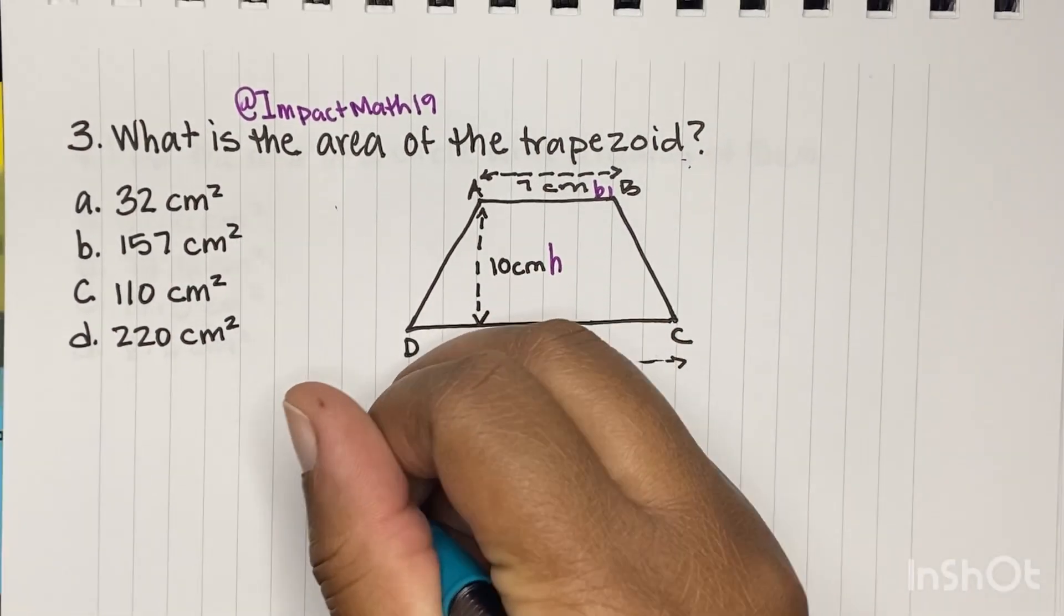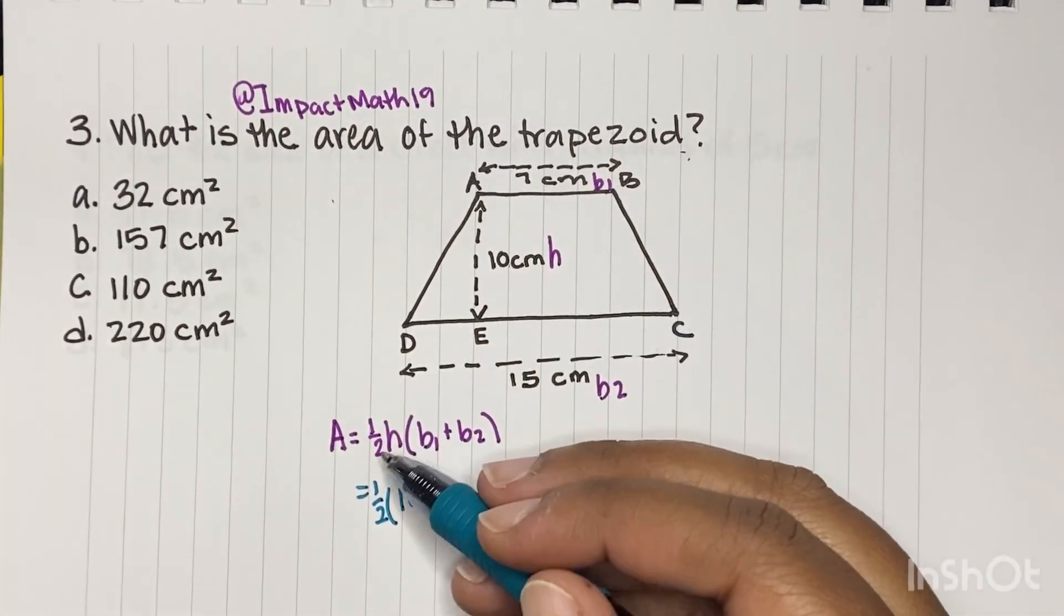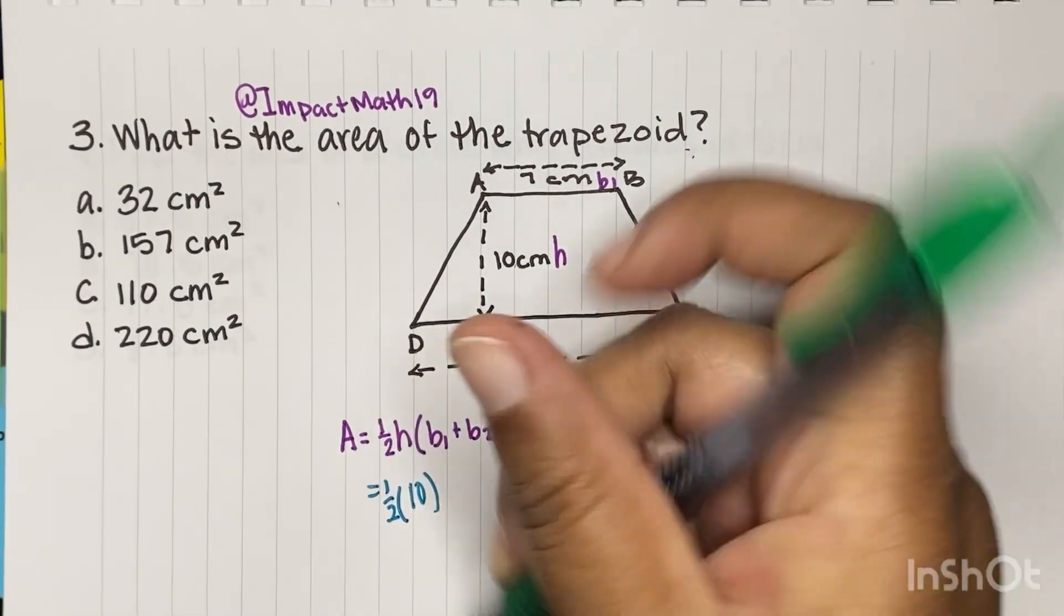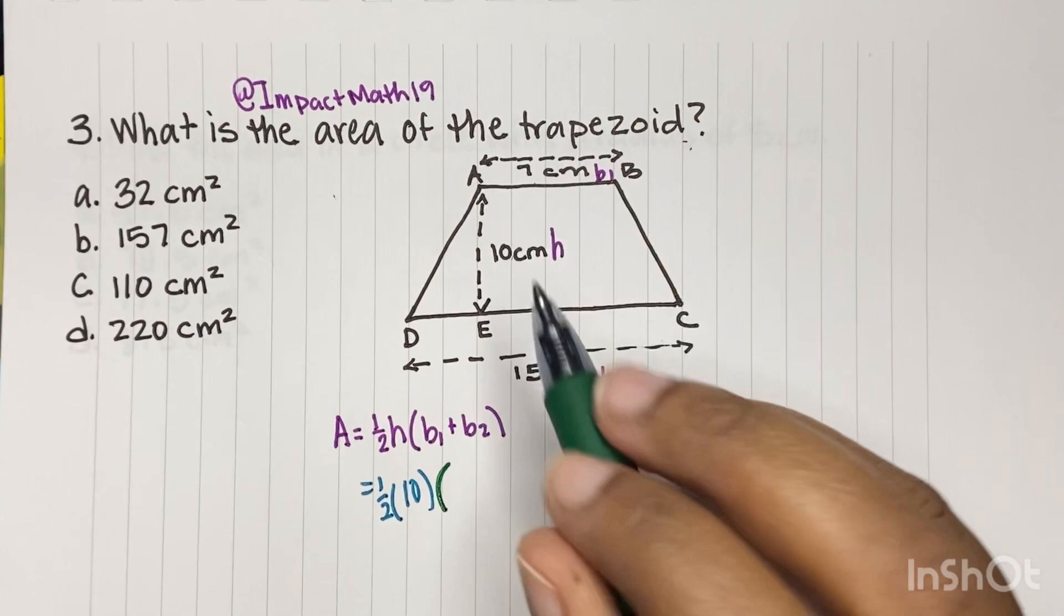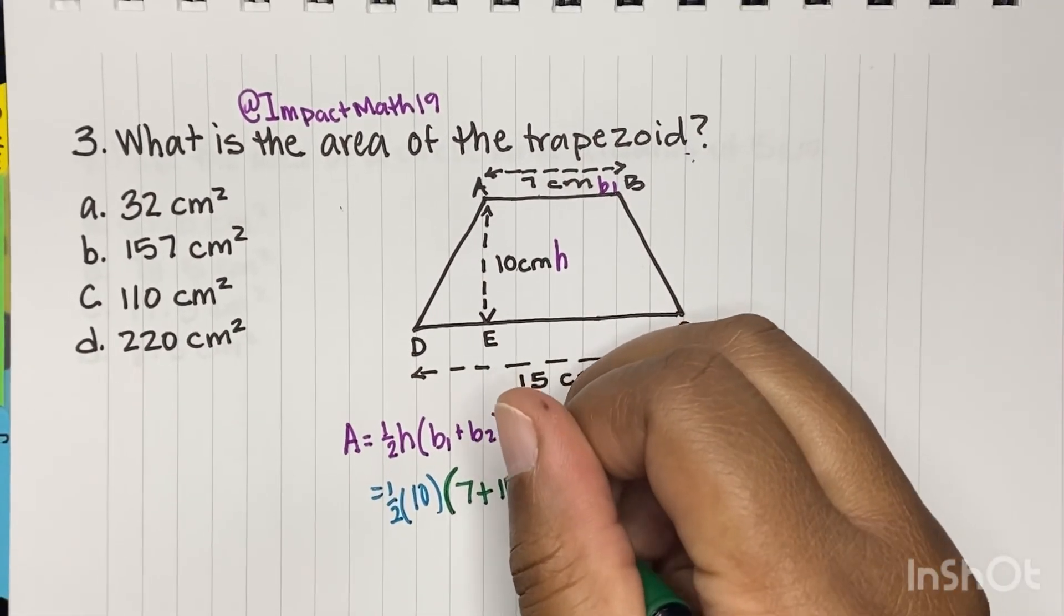So we're going to do a half times the height is 10. So we're going to plug in 10 wherever we see an H. Then in our base 1, we're going to do 7 plus our base 2, which is 15, okay?